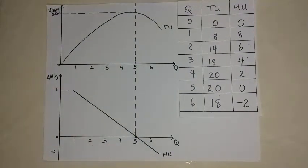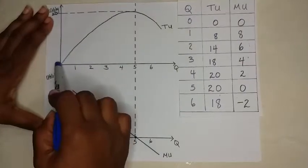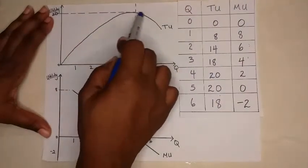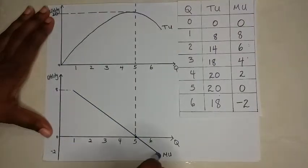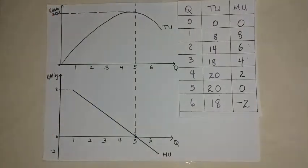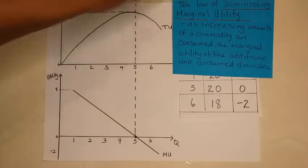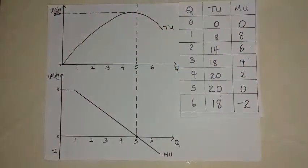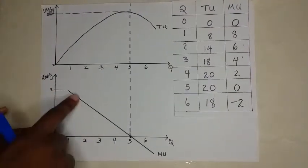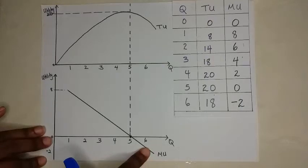Now pay attention to the slopes of the curves. For the total utility, notice that this is increasing at a decreasing rate. And notice that the MU is at a negative slope. And this is what we would call the law of diminishing marginal utility. So as increasing amounts of our commodities are consumed, the marginal utility of the additional unit consumed diminishes. So we see in here, as we consume more, the MU is adding less and less to your TU.